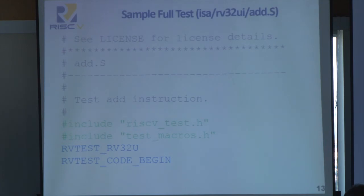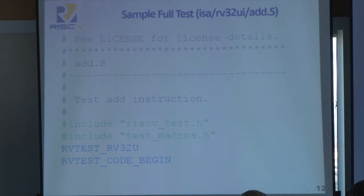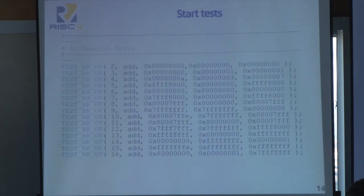With that, I'll go through an actual full test located in RISC-V ISA tests. First, you have some boilerplate license. Next, you have the include for RISC-V test to make sure we hook into the target environment. Second, test macros, because we wish to use some of the simplifying macros in RISC-V test slash ISA slash macros. And then finally, an actual invocation of the test virtual machine, and then a marker that we are beginning the test code.